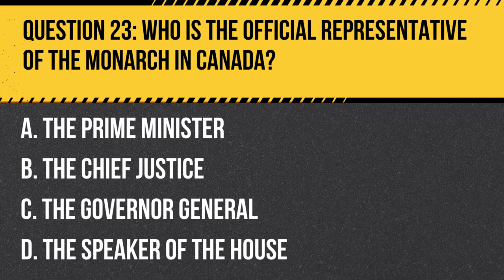Question 23. Who is the official representative of the monarch in Canada? A. The Prime Minister. B. The Chief Justice. C. The Governor-General. D. The Speaker of the House.